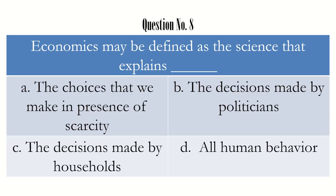Question number 8: economics may be defined as the science that explains — what? Option A says the choices that we make in the presence of scarcity, which is what Lionel Robbins told us. Option B is decisions made by politicians — economics is not limited to politics. Option C is decisions made by households — economics is much wider, considering individuals, firms, governments, and international bodies. Option D is all human behavior — that is also not the option. So the right answer is option A: economics is about the choices that we make in the presence of scarcity.